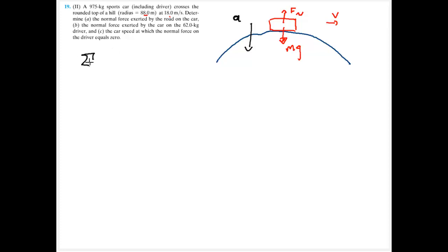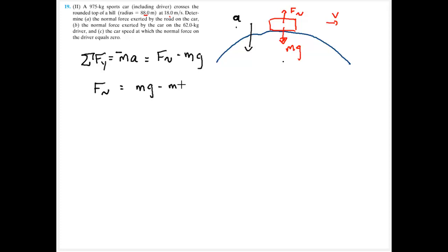Writing Newton's second law: sum of forces in the y direction equals mass times acceleration. Normal force upward minus mass times gravity, with acceleration in the downward (negative) direction. Adding mass times gravity to both sides, the normal force equals mass times gravity minus mass times acceleration, factored as mass times (gravity minus v squared divided by r).